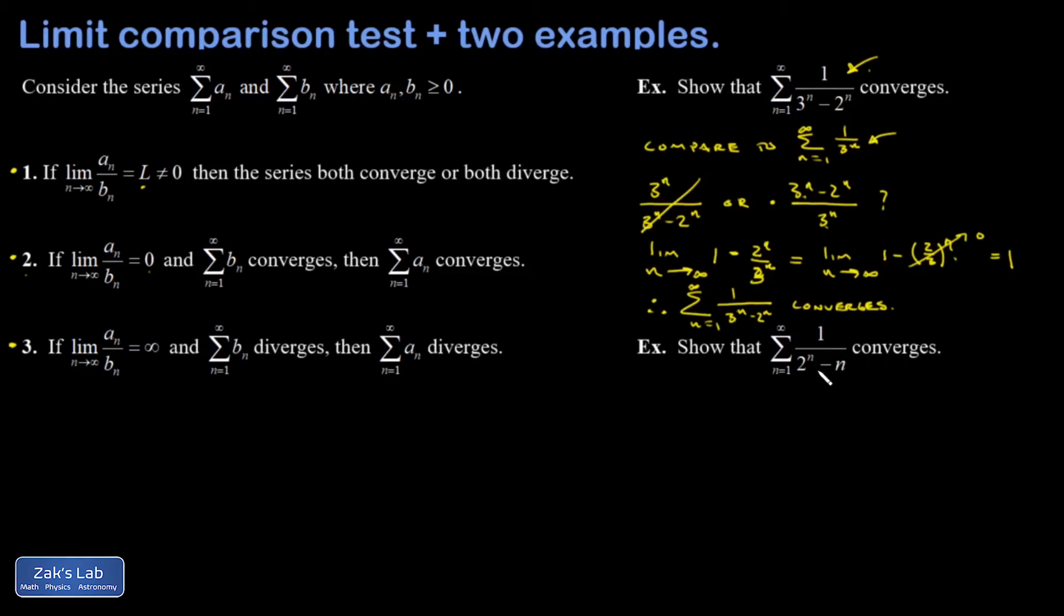So I think about in the long run, as N becomes very, very large, which one of these terms is going to dominate? And two to the N grows way faster than N. So that denominator is essentially becoming two to the N as N becomes large. And that's how we choose our comparison.